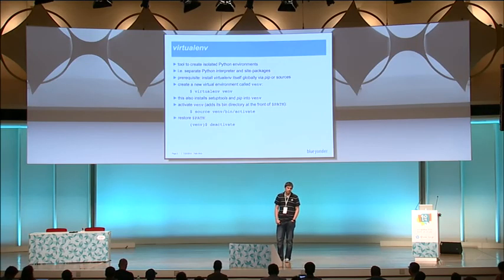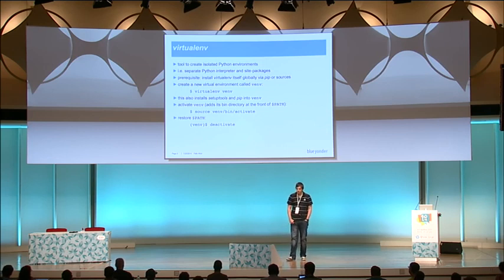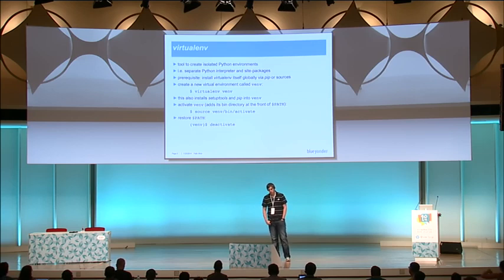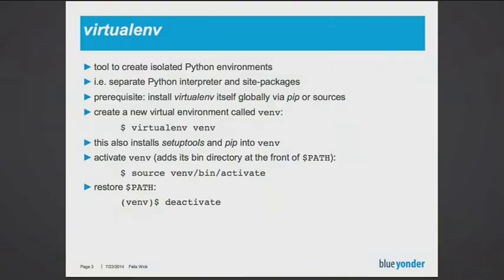This comes with setuptools and pip installed into your new virtual environment. There's a small helper script, activate, which you can use to add your new virtualenv to your path variable. So when you type pip install something afterwards, it just gets installed to your virtual environment. To get out of it, you just type deactivate, and then you can directly jump to another virtual environment if you work on different projects at the same time.